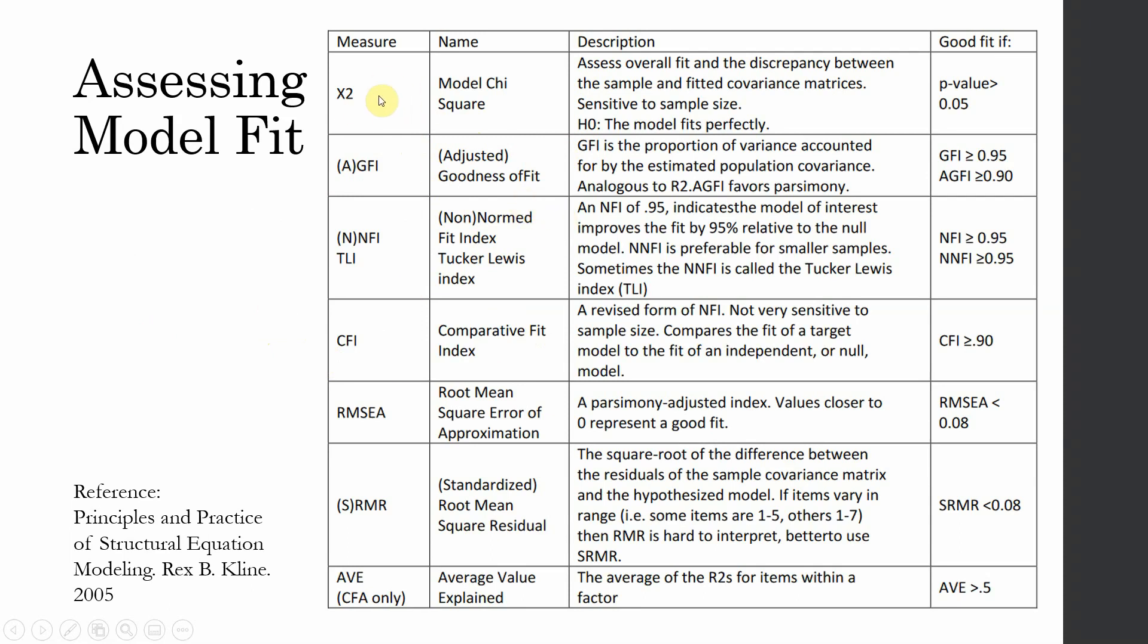Each of these fit indices has its own good fit or cutoff value. For example, for chi-square, your p-value should be greater than 0.05. However, this is very sensitive to sample size. If you have a higher sample size, it's highly likely that you won't get a good fit.